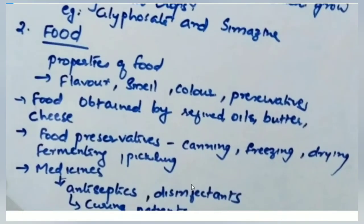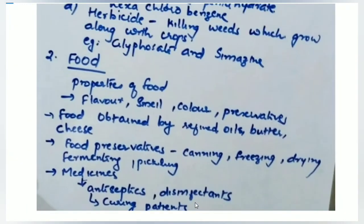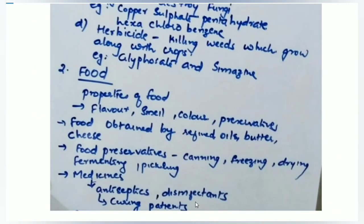Chemistry is also used in medicines. This includes antiseptics, disinfectants, and curing patients. For example, paracetamol or aspirin contains substances that bind to receptors. Antipyretics are used to reduce temperature and antibiotics are used to fight infections — these are all chemicals.